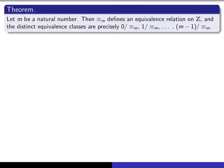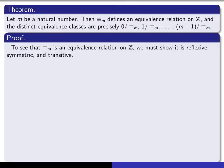Here's the main theorem: let m be a natural number, then this relation defines an equivalence relation on the set of integers, and the equivalence classes are exactly these — there are exactly m distinct equivalence classes, determined by the numbers 0, 1, all the way up to m minus 1. To prove this, we first want to prove that it's an equivalence relation, showing it's reflexive, symmetric, and transitive.